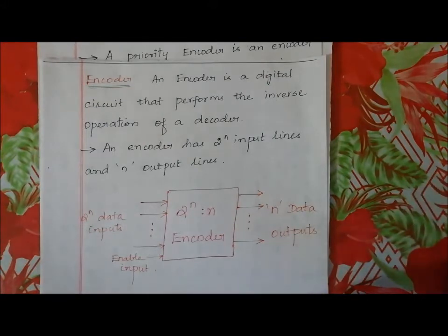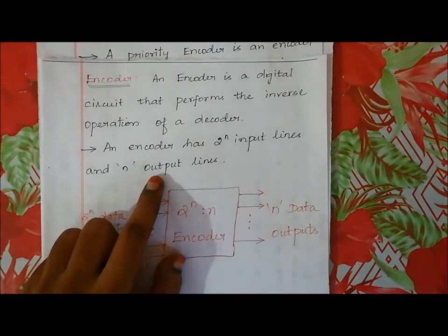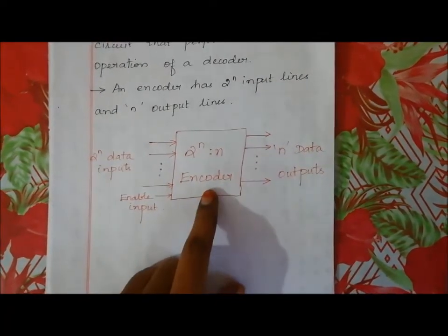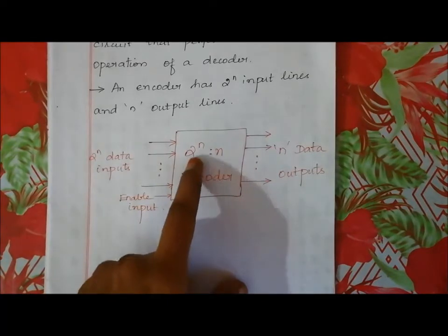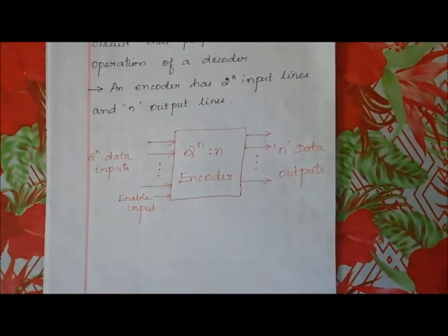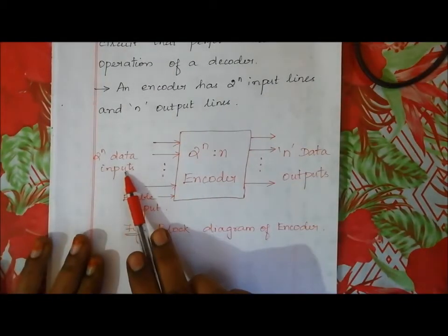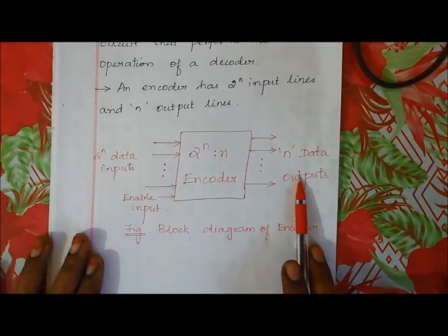In a decoder, we have n input lines and 2^n output lines. The encoder is the reverse process of the decoder — so encoder has 2^n input lines and n output lines. Let's see the block diagram: in a decoder we go from n to 2^n, and in an encoder we go from 2^n inputs to n outputs.